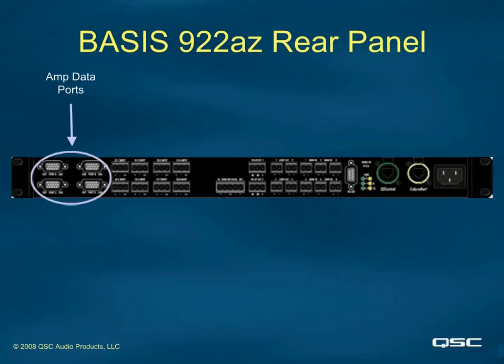All signals on data port connectors and cables are DC or audio frequency AC analog audio signals — there are no digital signals on these connectors or cables. There are two quasi-balanced audio signals to the amplifier. Returning signals from the amplifier being monitored include clips, temperatures, load status, output voltages, currents, and amp headroom.